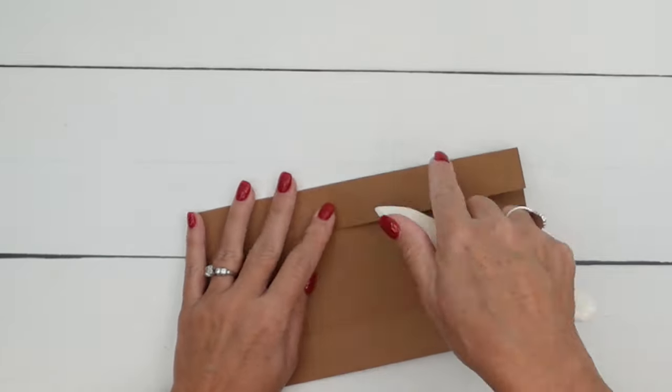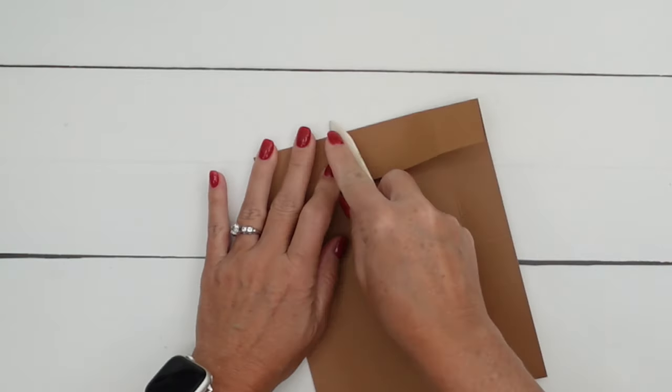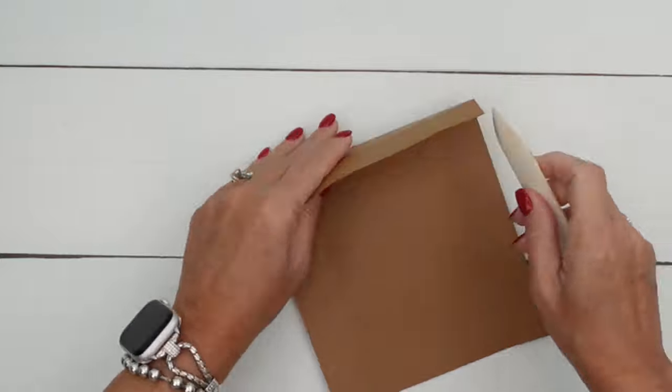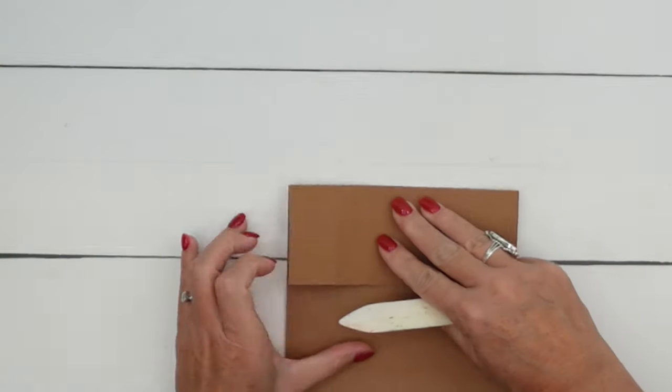Now grab your bone folder and we want to burnish these lines, get them nice and crisp. This will help your box look nice and square.